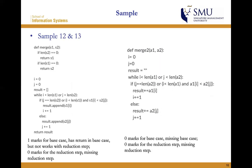For sample twelve, I will give one mark for the base case — it has a return — and zero marks for the reduction step because it is missing the reduction step. For sample thirteen, it is actually zero marks because it is not a recursion method; it is an iterative method.